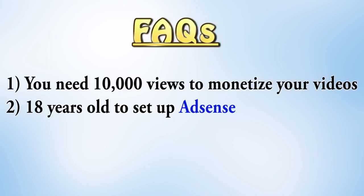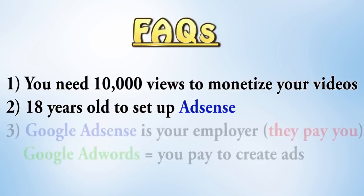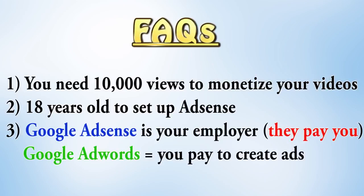Number two: you need to be 18 years and older to set up an AdSense account. If you're under 18, get a guardian, friend, or relative to help you set up AdSense. People sometimes ask: is Google taking money from me or paying you? Google AdSense pays you money for content you post on your YouTube channel and on your blogs. Whereas Google AdWords is where you pay Google to create ads displayed on other people's websites or YouTube — that's the difference.